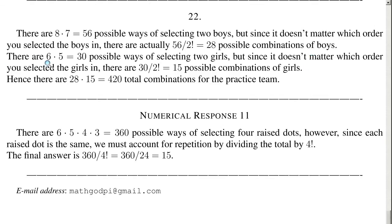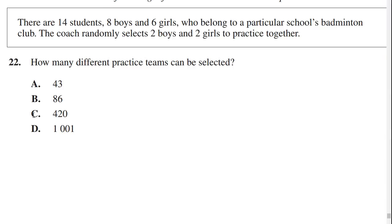Same thing with the girls: 6 choices for the first, 5 choices for the second — but combinations are the same if you switch the order. So there are 6 times 5 equals 30 possible ways, but since order doesn't matter, there are 30 divided by 2 factorial equals 15 possible combinations of girls. Hence, there are 28 times 15 equals 420 total combinations for the practice team. The answer is C, 420.